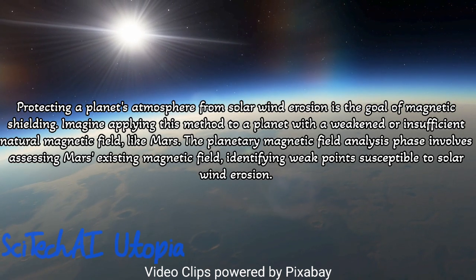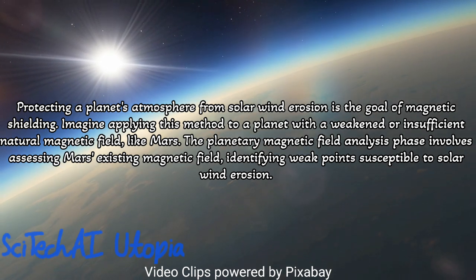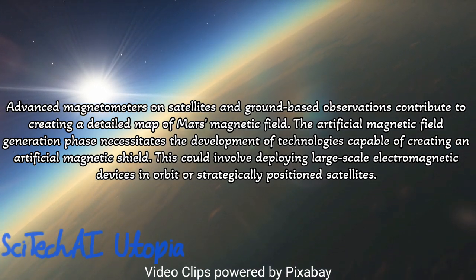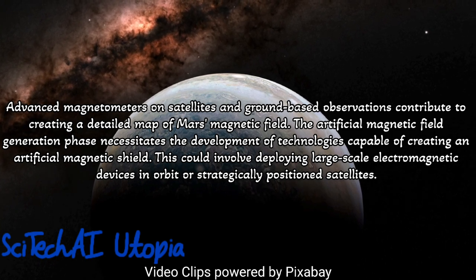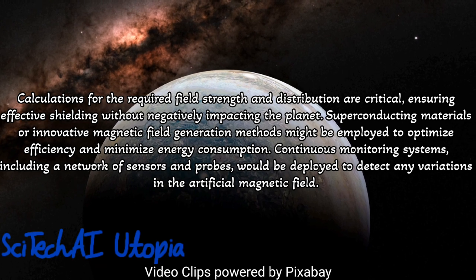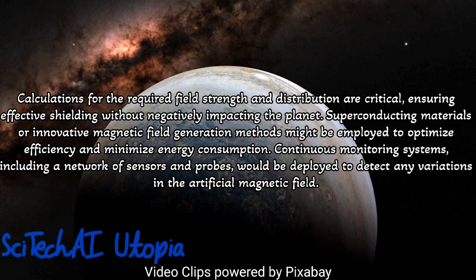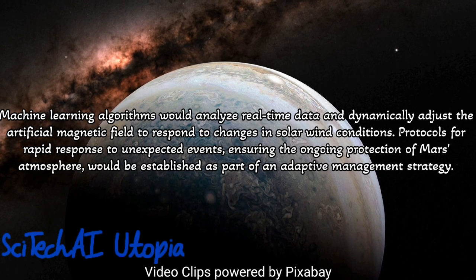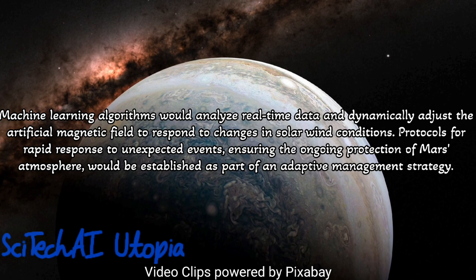Method 3: Magnetic Shielding. Deploy magnetic field generators or shielding devices in orbit around the target planet to establish a protective barrier against solar wind. Calculate the required magnetic field strength based on the planet's size, composition, and distance from its star. Monitor the magnetic field continuously, employing advanced sensors and satellite systems to detect fluctuations and make real-time adjustments. Address potential side effects such as interference with communication systems through careful engineering and advanced control algorithms. Consider long-term maintenance strategies, potentially involving autonomous repair systems or periodic adjustments.